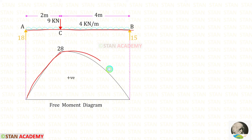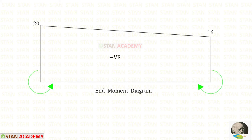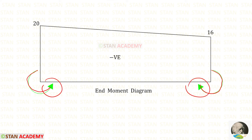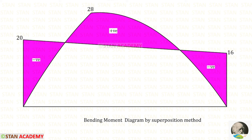The bending moment diagram for the simply supported beam with UDL over the full span is parabolic — this is called the free moment diagram and it is positive. The end moment diagram uses Ma equal to 20 and Mb equal to 16. Ma is anti-clockwise and Mb is clockwise, and since both arrows indicate upwards the end moment diagram comes above the baseline. Since 20 is bigger than 16 the line is slightly higher at A. Combining both diagrams gives the final bending moment diagram, leaving the overlapping region unmarked.